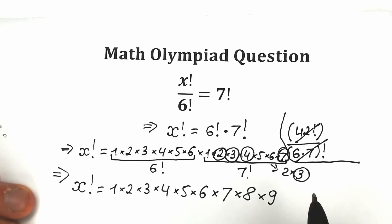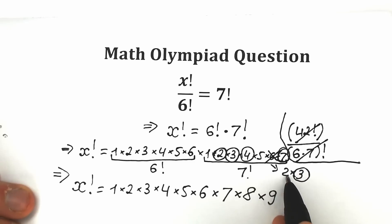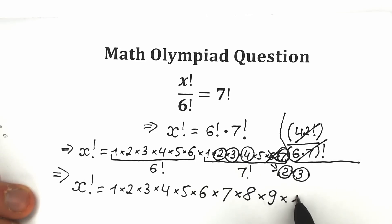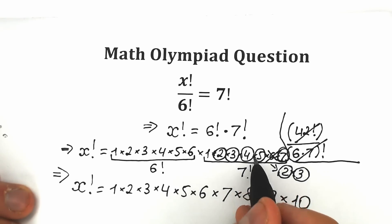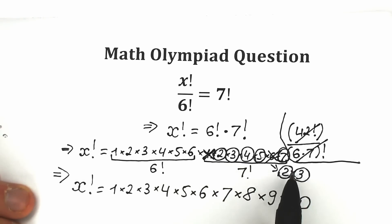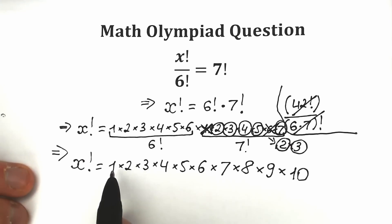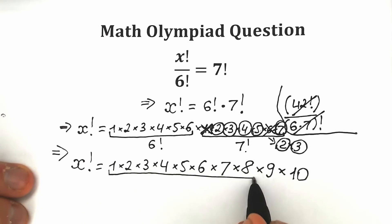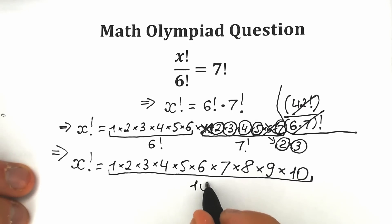Now we can cancel the 6 in our mind since we rewrote it as 2 times 3. We have 2 and 5 remaining, and 2 times 5 equals 10, so times 10. We cancel the 1 since it changes nothing. So we've used 2, 3, 4, 5, 6 (as 2 times 3), and 7. The key moment: x factorial equals a product of 1 times 2 times 3 times 4 times 5 times 6 times 7 times 8 times 9 times 10. This is 10 factorial — a product from 1 to 10.